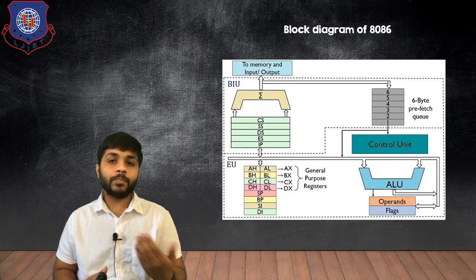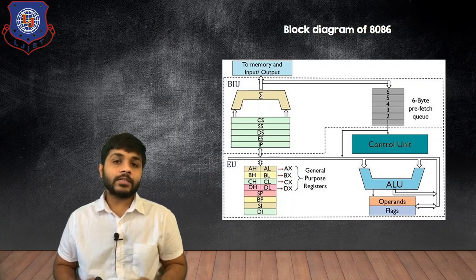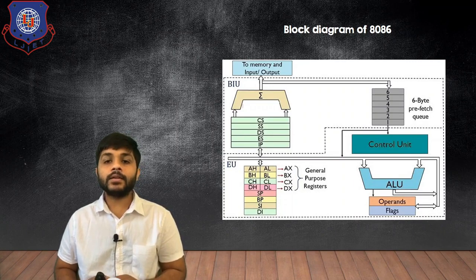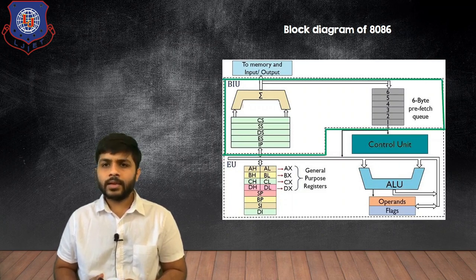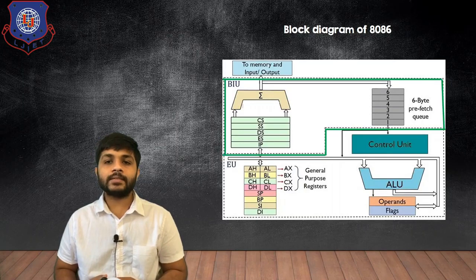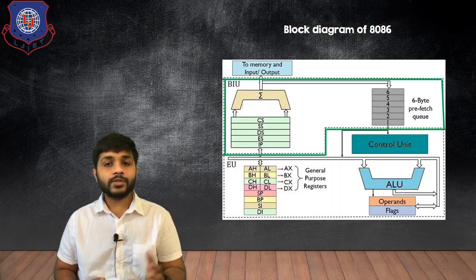The block diagram of the 8086 is divided into two parts. The first part is known as the Bus Interface Unit and the second part is known as the Execution Unit. Let's see the components which are present in the Bus Interface Unit.